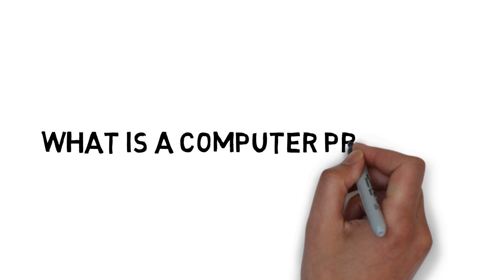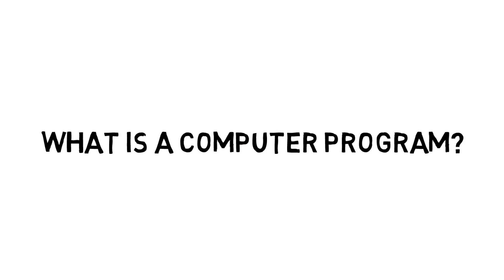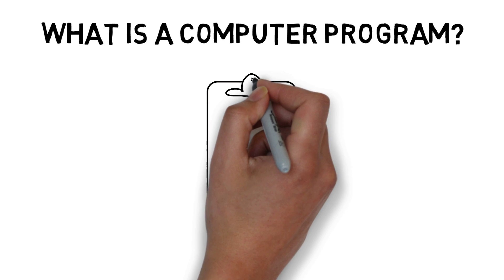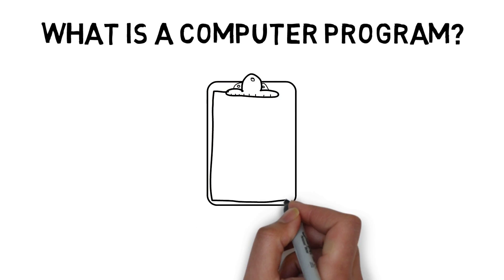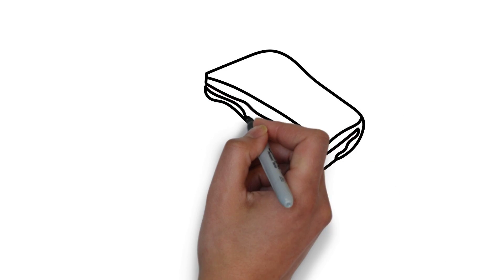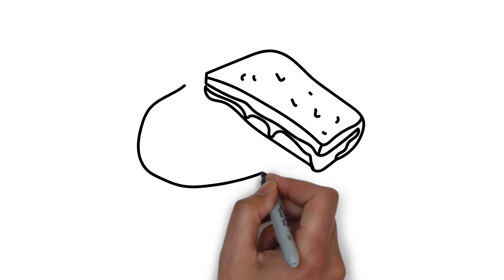The usual definition of a computer program is simply a list of instructions which a computer follows to achieve something. But let's understand what this really means.